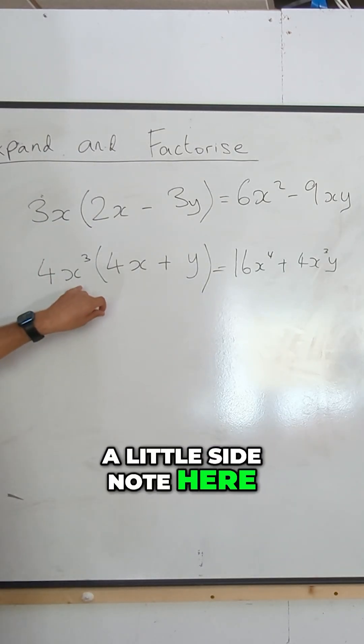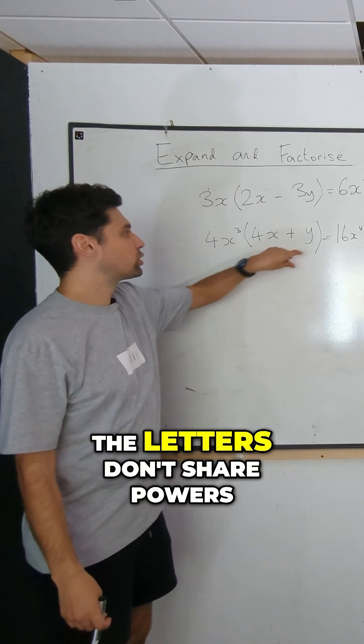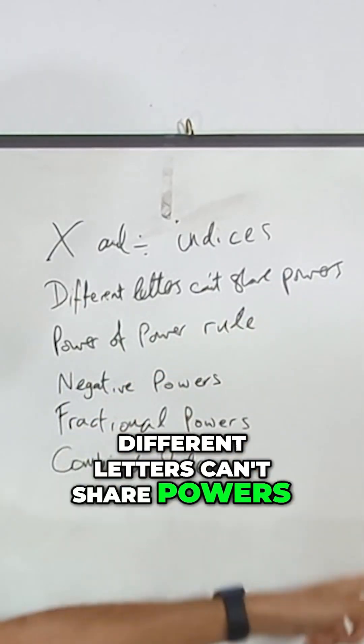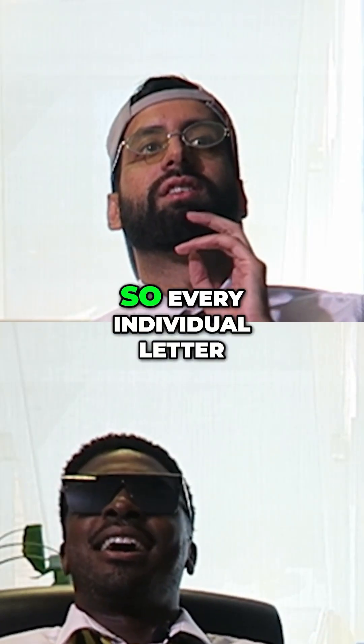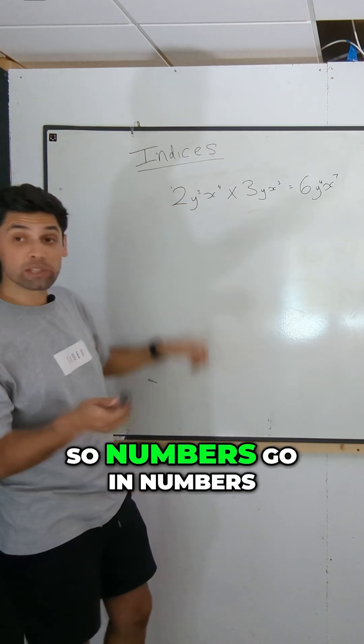A little side note here. I may have mentioned in a previous lesson, the letters don't share powers. Different letters can't share powers. So every individual letter has its own set of powers. So numbers go with numbers, letters go with letters.